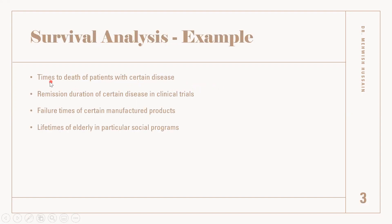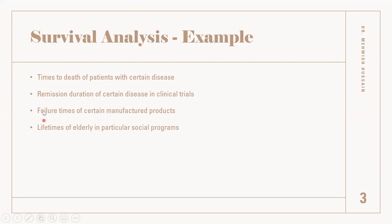For example, we want to observe the time to death of a patient with a certain disease. So let's suppose the death is our event and a person is enduring a certain disease. We will observe when the death will occur for that patient. So we have two variables: the time variable and the death or survival event, and the duration from the onset of the study. Or for example, the remission duration for a certain disease in a clinical trial, or the failure times of certain manufactured products — you have the product and you are observing the duration until it becomes failed.